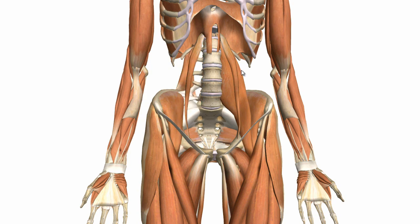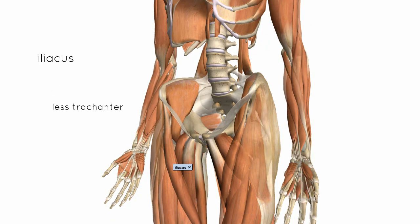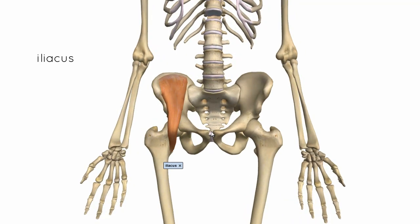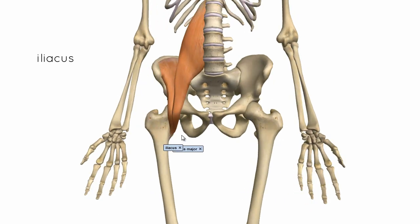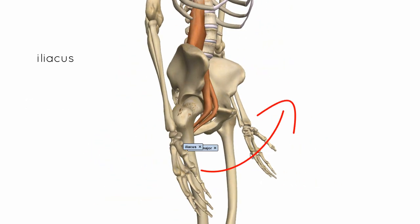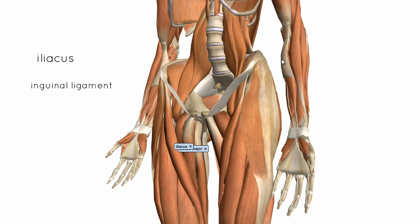Getting rid of those two muscles, we can take a look at the iliacus, which sits just a little bit inferior. The iliacus muscle sits in the iliac fossa and joins the psoas muscle to insert onto the lesser trochanter. Collectively, the iliacus and psoas major are referred to as the iliopsoas, which serves the same function as the psoas major — it flexes the thigh at the hip joint. The iliacus is innervated by the femoral nerve. Both the distal ends of the iliacus and psoas major pass underneath the inguinal ligament to insert onto the lesser trochanter of the femur.